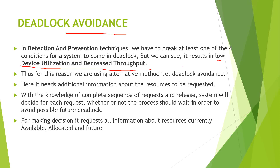Let's go deeper into deadlock avoidance. Here, what we are doing is tracking full information of the processes which are requesting resources and keeping track of it in a table. We will check what are the available resources, what needs to be allocated in the future, and the further conditions regarding these types of resources.